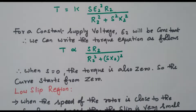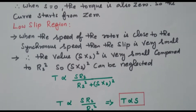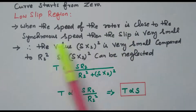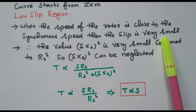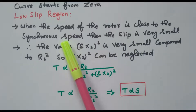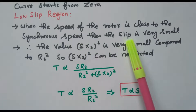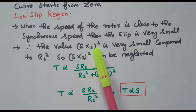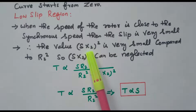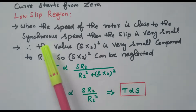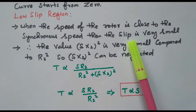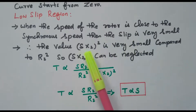There are two regions: low slip region and high slip region. In the low slip region, when the rotor speed is close to synchronous speed, the slip is very small. Since S·X2² is very small compared to R2², we can neglect the S·X2² term in the torque equation. The slip is very small, so S·X2² becomes very very small, and we can neglect it compared to R2².